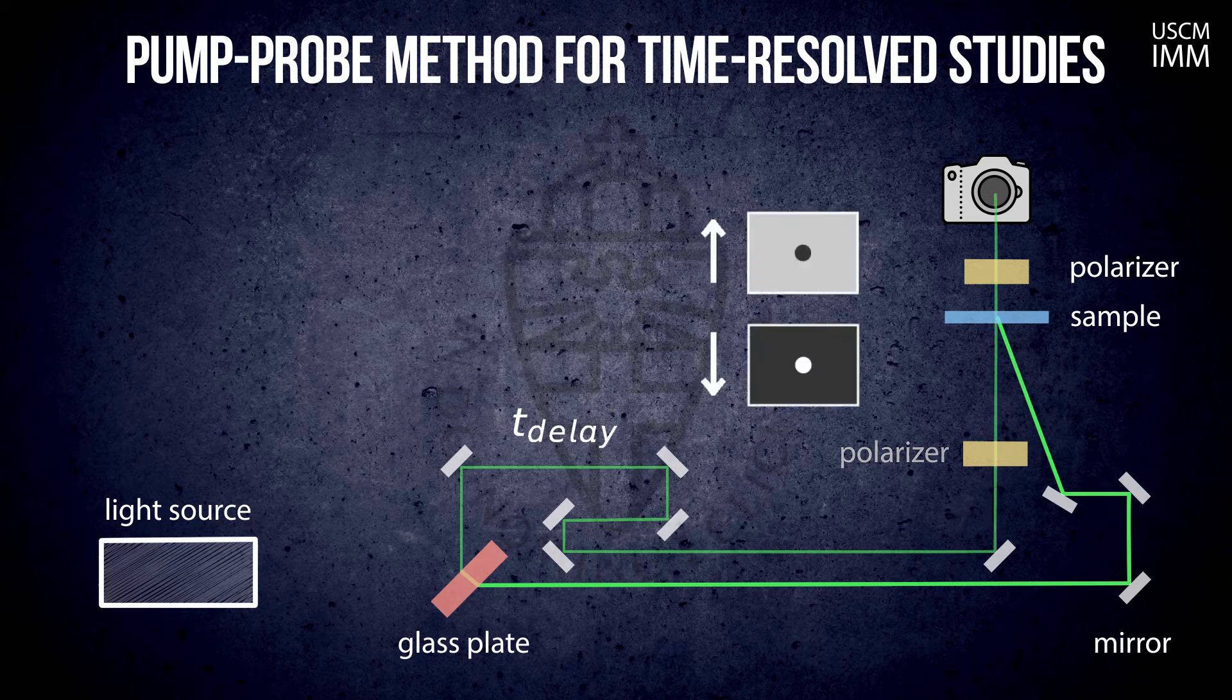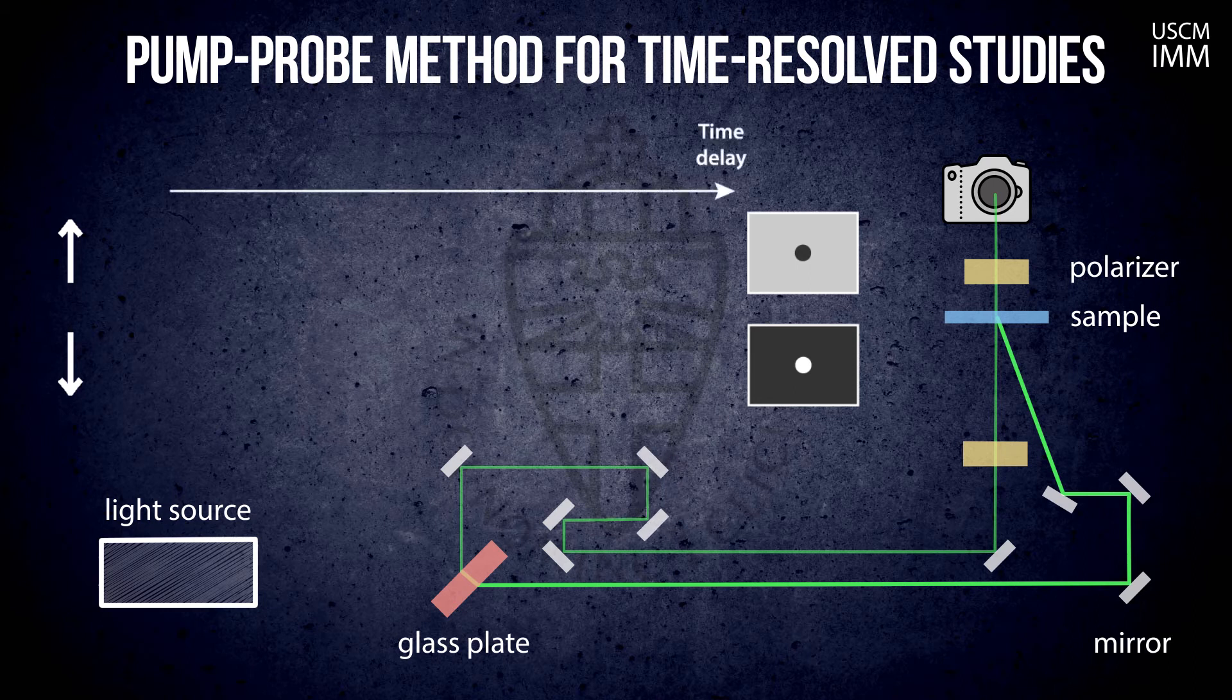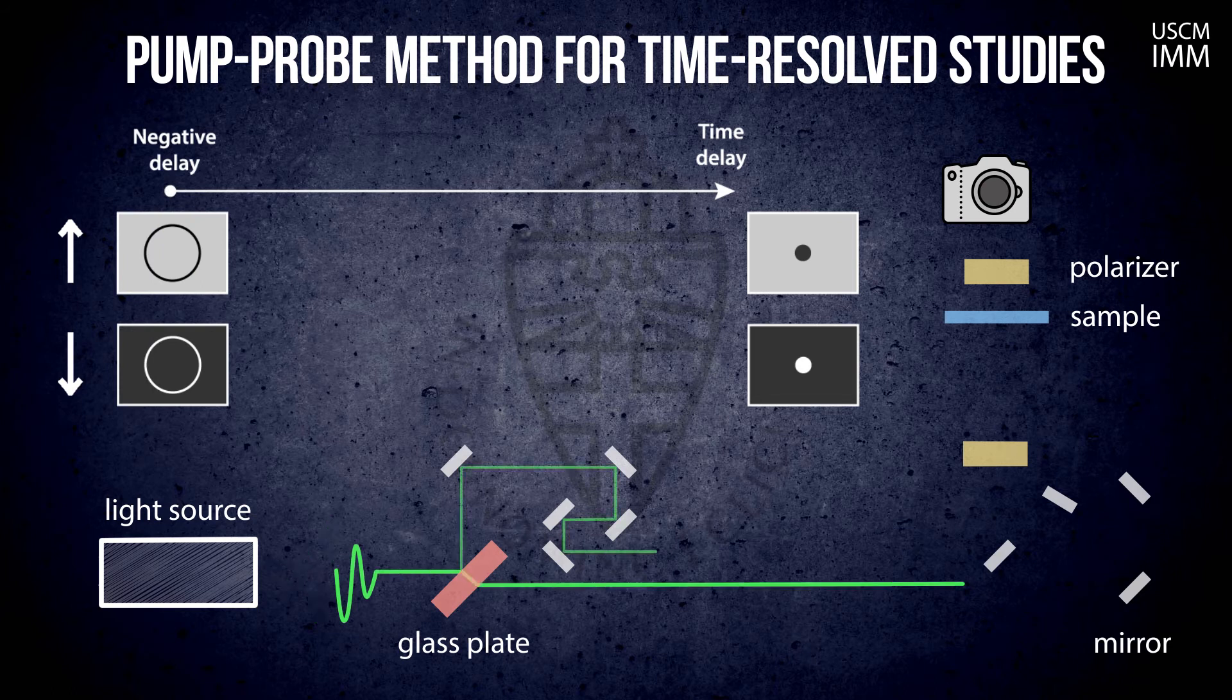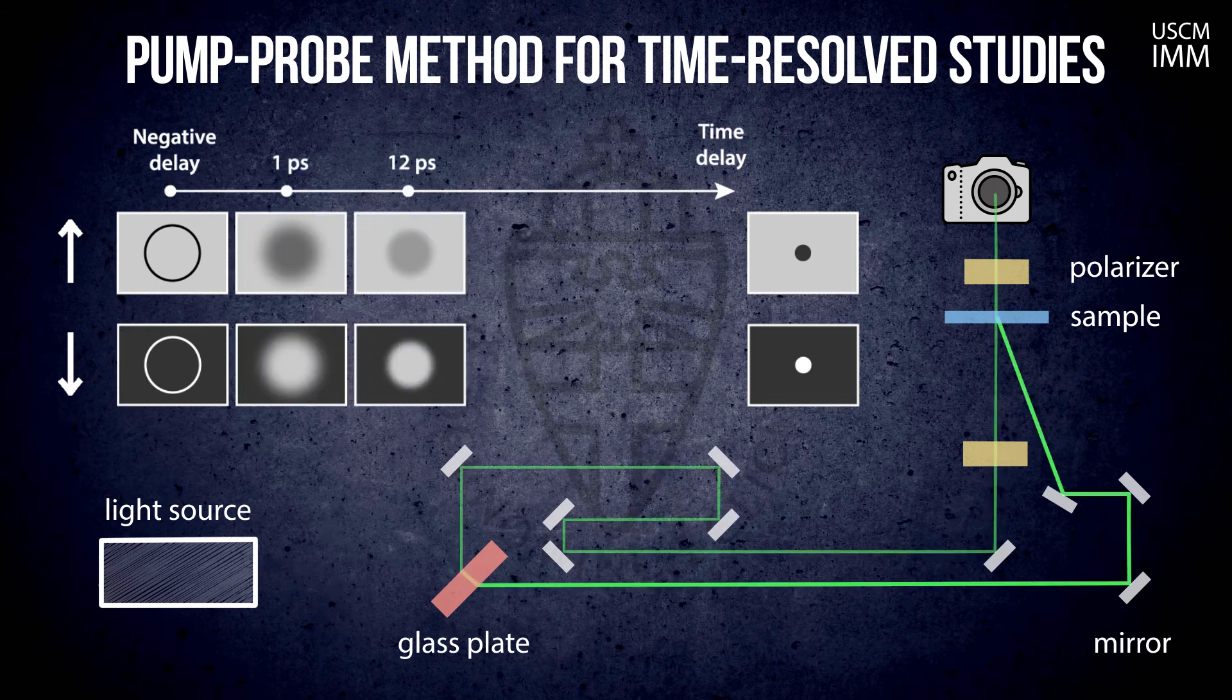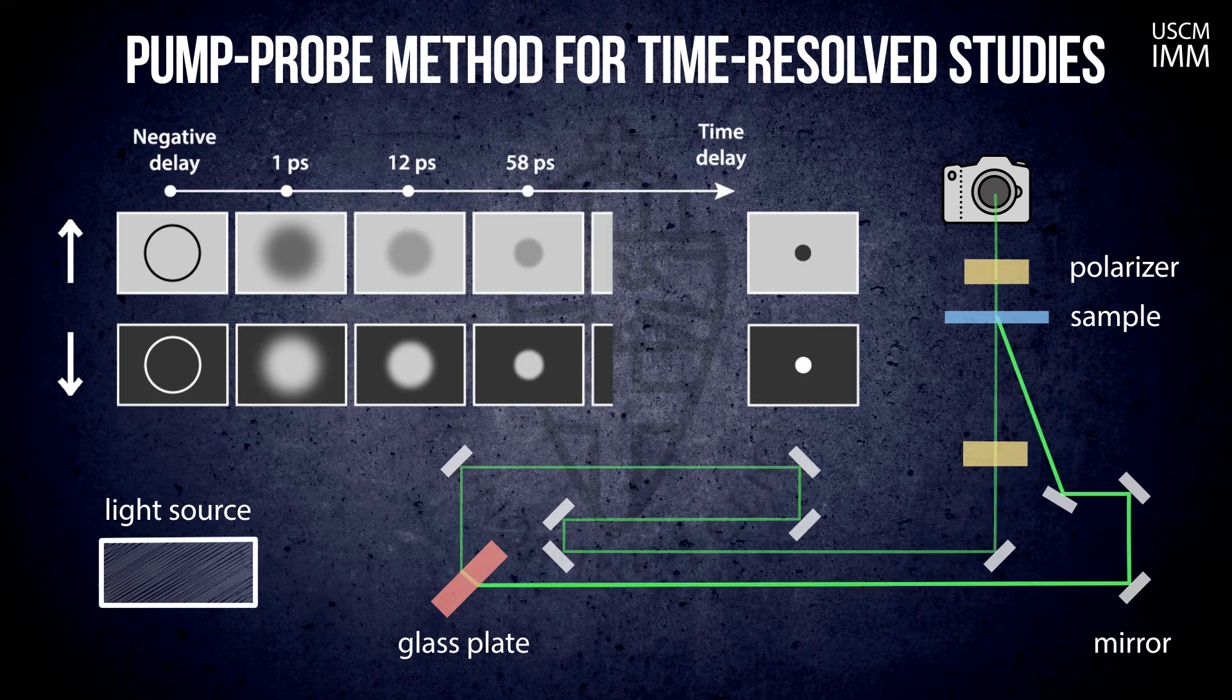After passing through two polarizers and reaching the camera, the probe will produce an image of magnetic domains in the sample at a given time delay after the excitation with the pump pulse. If the pump pulse launches magnetization reversal, we will be able to trace its dynamics by making images of magnetic domains for various time delays between the pump and the probe pulses.